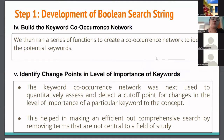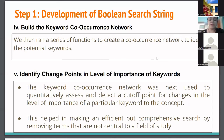The next important thing was to build a keyword co-occurrence network. We ran a series of functions to create a co-occurrence network and then identified the potential keywords. These keywords were quantitatively assessed and a detected cutoff was identified for changes in the level of importance of a particular keyword. This was done to help remove terms that were not central to the field of study.